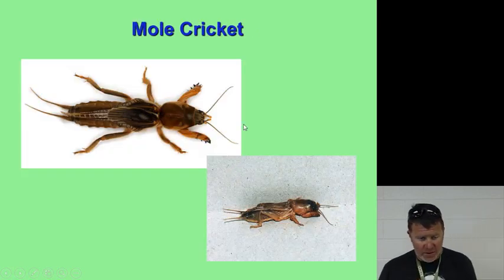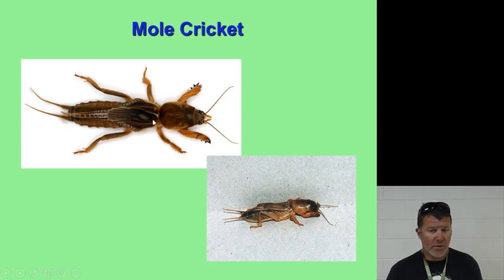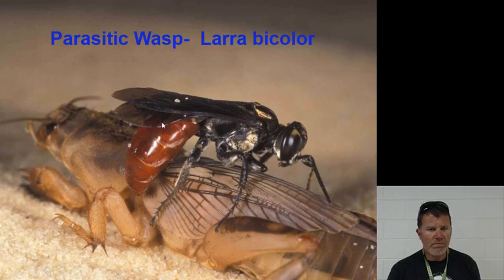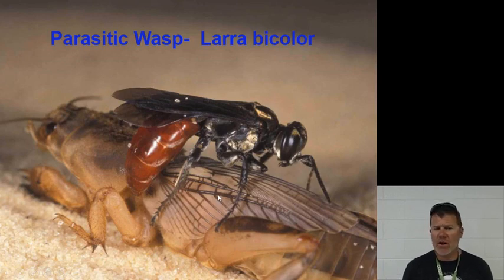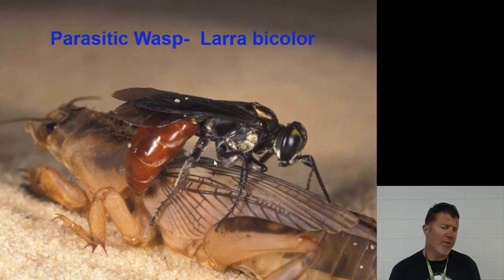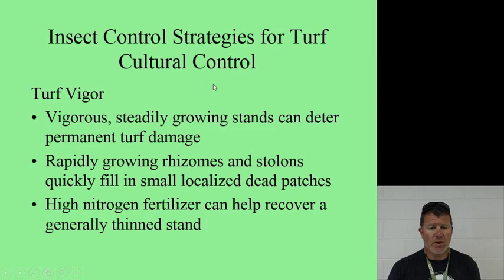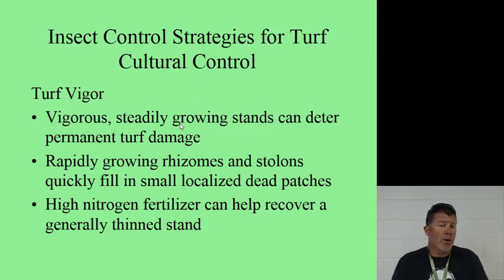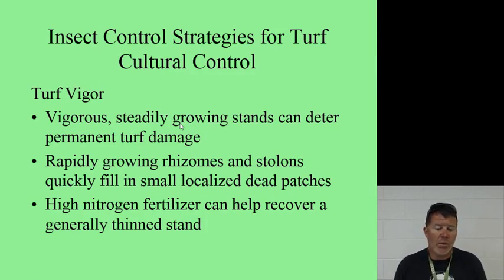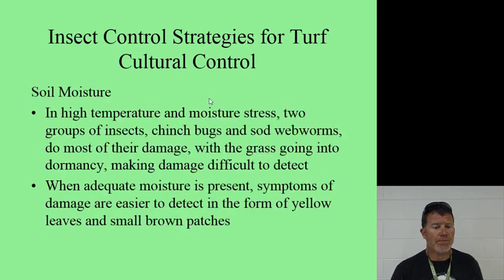The mole cricket — good for fishing, and a good biological control is a parasitic wasp. Read the information about the mole cricket in your textbook. Cultural strategies for turf: vigorous, steadily growing stands can deter permanent turf damage. Rapidly growing rhizomes quickly fill in localized dead patches, especially in warm-season grasses. High-nitrogen fertilizer can help recover weak and thinned-out grass.